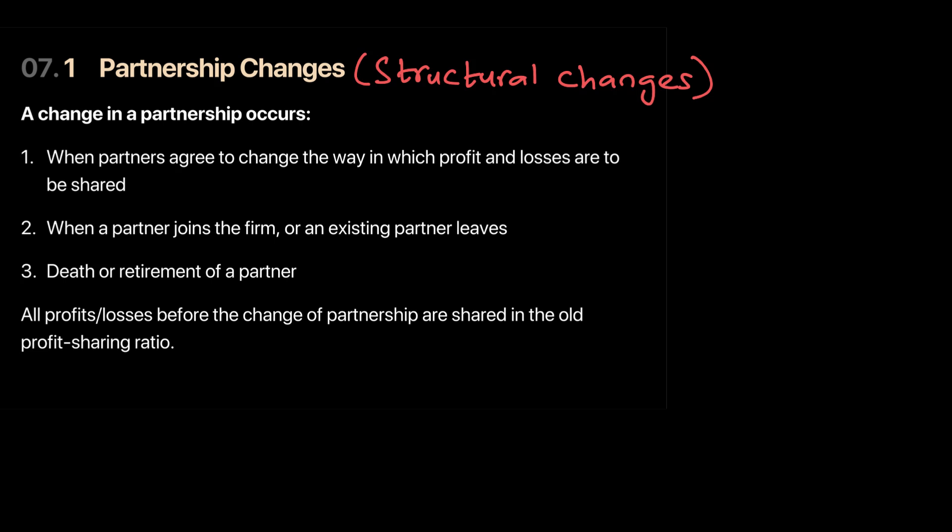Partnership changes means that due to some event, the partnership agreement has to be changed. Remember, the agreement is where you write down all the terms, conditions, profit sharing, salary, etc. A structural change can occur when partners decide to change the profit and loss ratio — for example, if one partner reduces his involvement, his profit sharing ratio will also decrease. There can also be a case when a new partner joins the business, or when there is a retirement or death of a partner, all of which require the agreement to be redrawn.